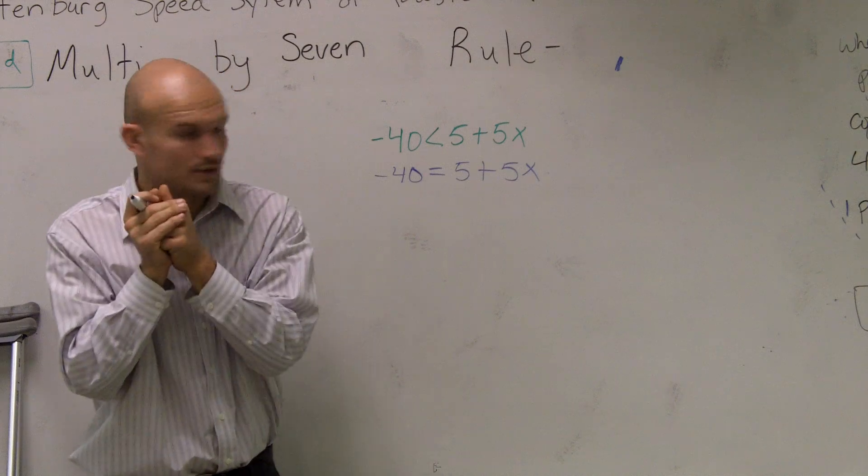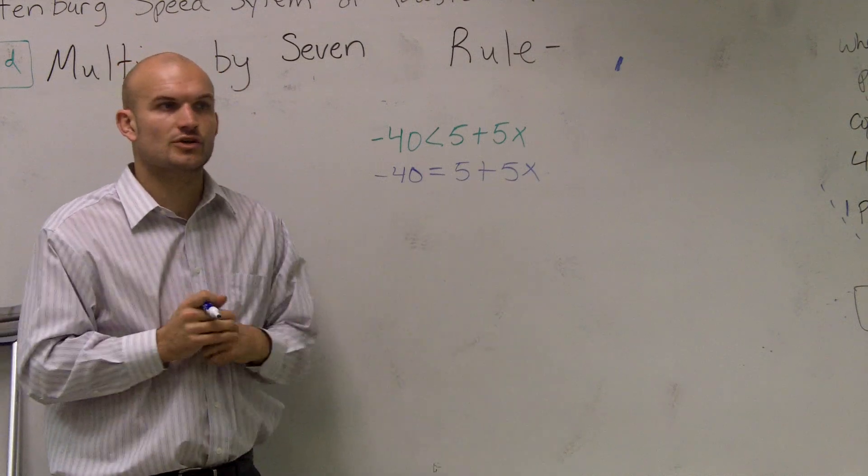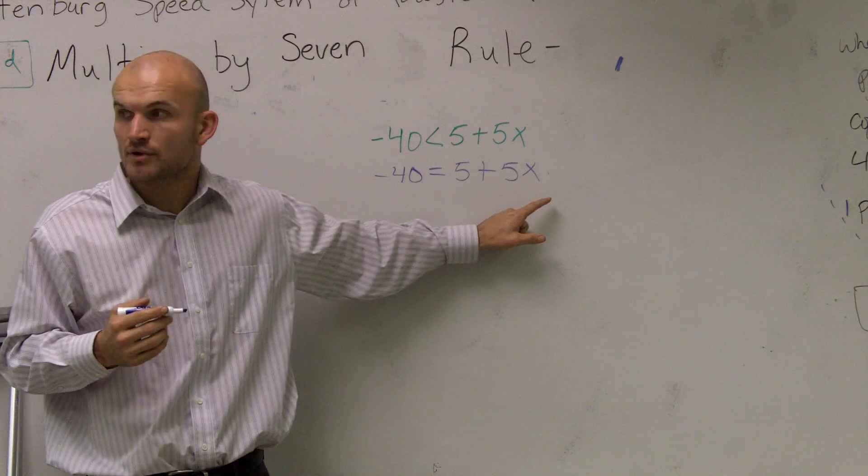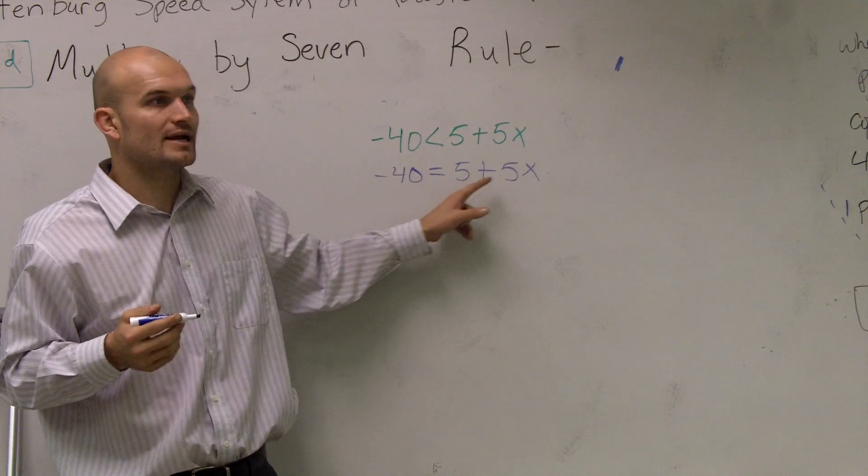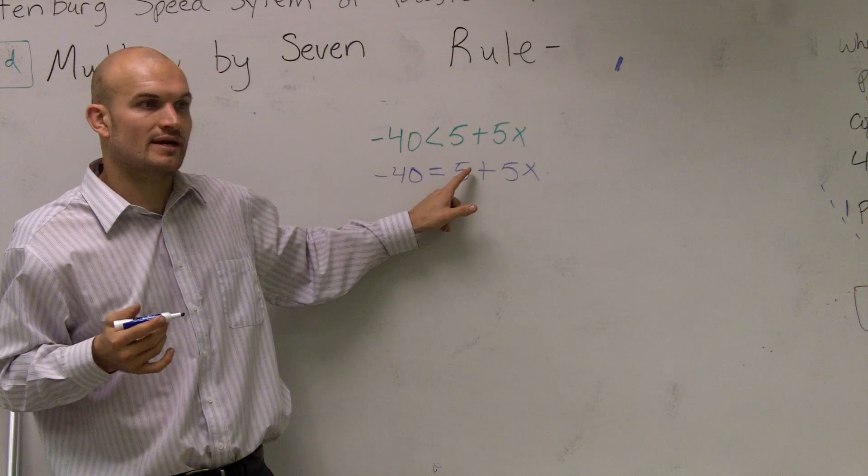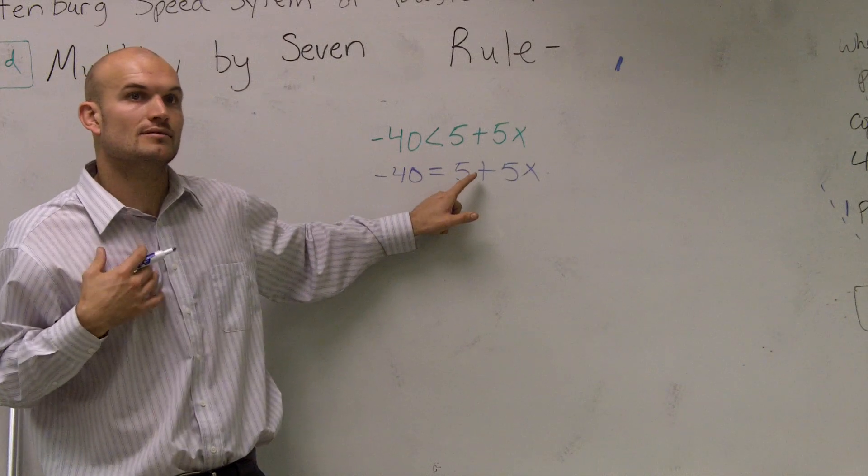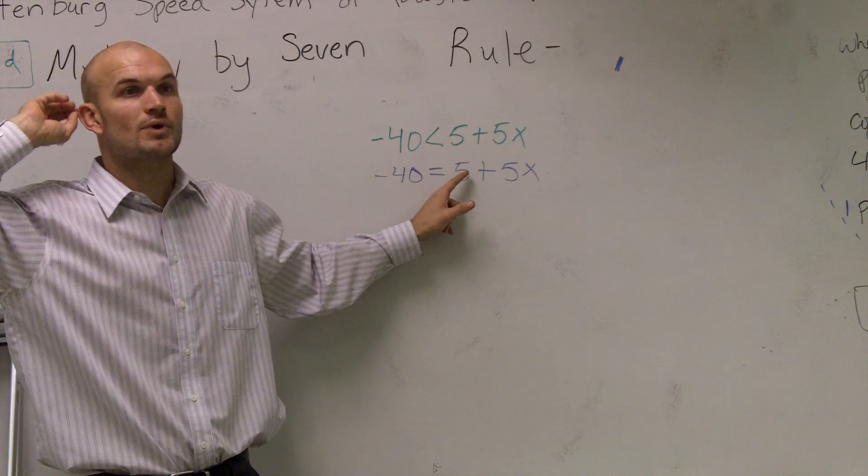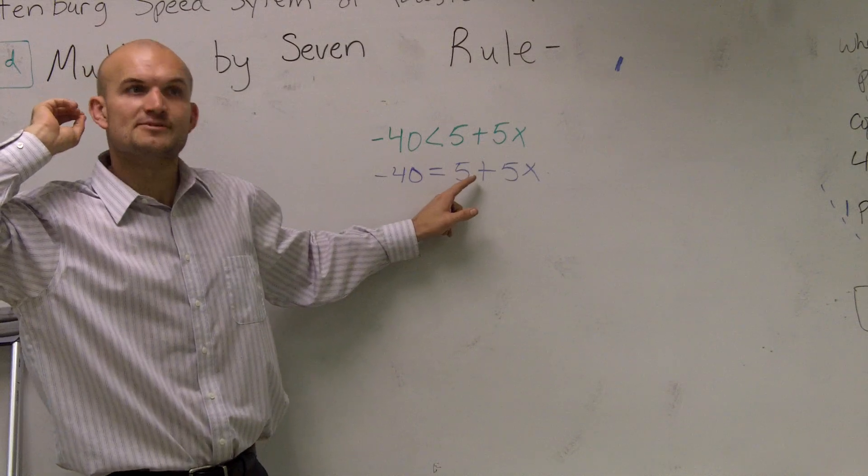Now, what we're going to do is solve it just like any other equation. Remember, we want to look at our variable and say what's happening to my variable. Well, I have a 5 and I have another 5. This 5, what is it doing? It's either adding, subtracting, multiplying, or dividing. So, therefore, Arthur raises his hand and says what? It's being added.